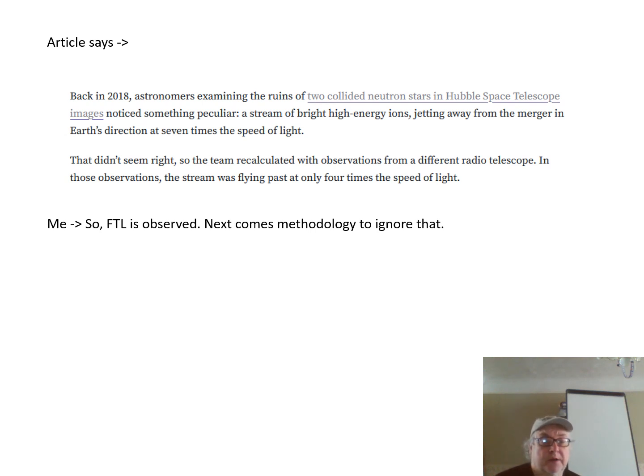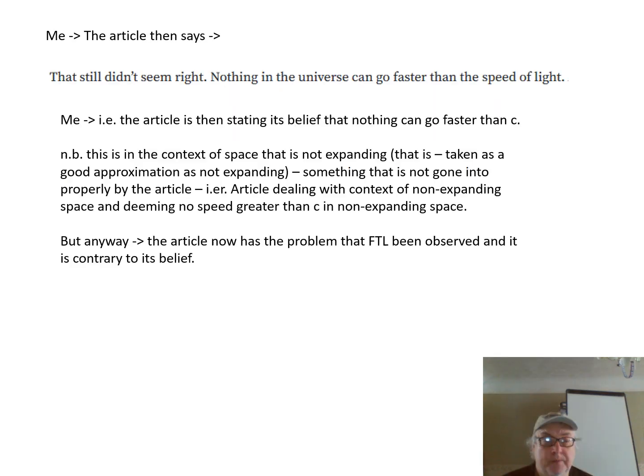That didn't seem right, so the team recalculated with observations from different radio telescopes. In those observations, the stream was flying past at only four times the speed of light. So what we've got really here is FTL has been observed. FTL, faster than light. And next, what they're going to do is come up with a method to ignore that observation.